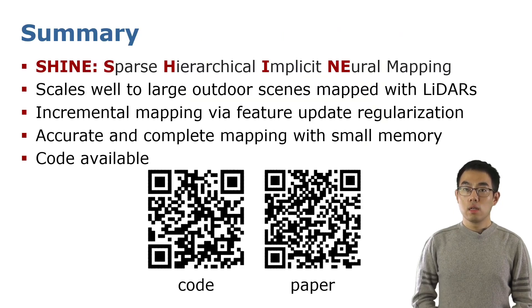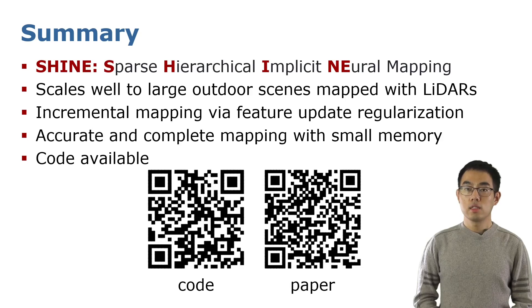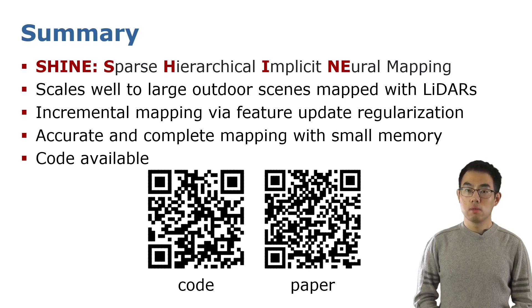In summary, we propose a sparse, hierarchical, implicit neural mapping system for range sensors. It scales well to large outdoor scenes. We also use feature update regularization to achieve incremental mapping. As the experiments show, our method is more accurate, complete, and more memory efficient than comparisons. We have already open-sourced our code. If you have any comments or questions, feel free to contact us. See you next time!